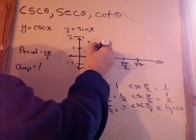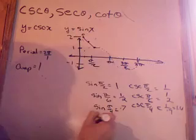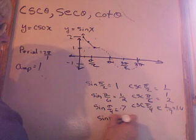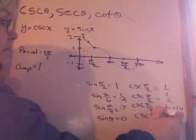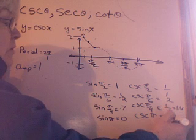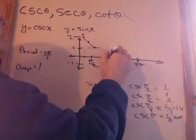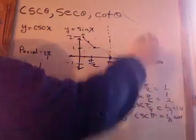All right. And now I have that graph here. What happens at π? The sine of π is 0. What's the cosecant of π? What's the reciprocal of 0? 1 over 0, undefined.